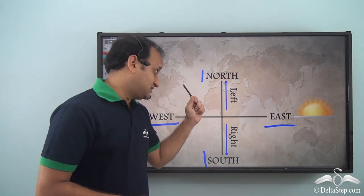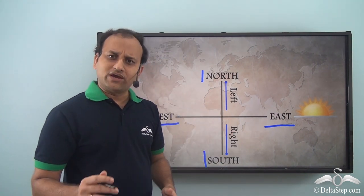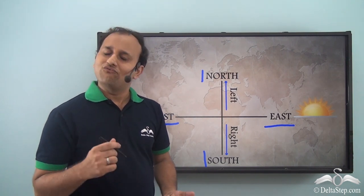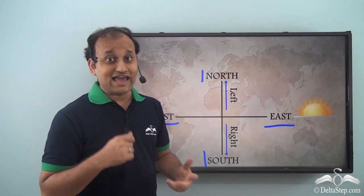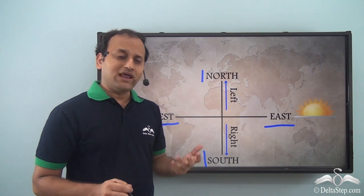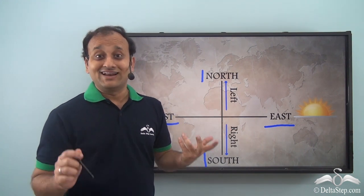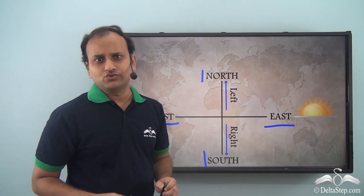So in this way you can get all the four directions, and with the help of these directions you can follow any particular route without a problem. Now let's see another situation. That is, what happens if there is no Sun? If it is nighttime, then how will you know the directions?